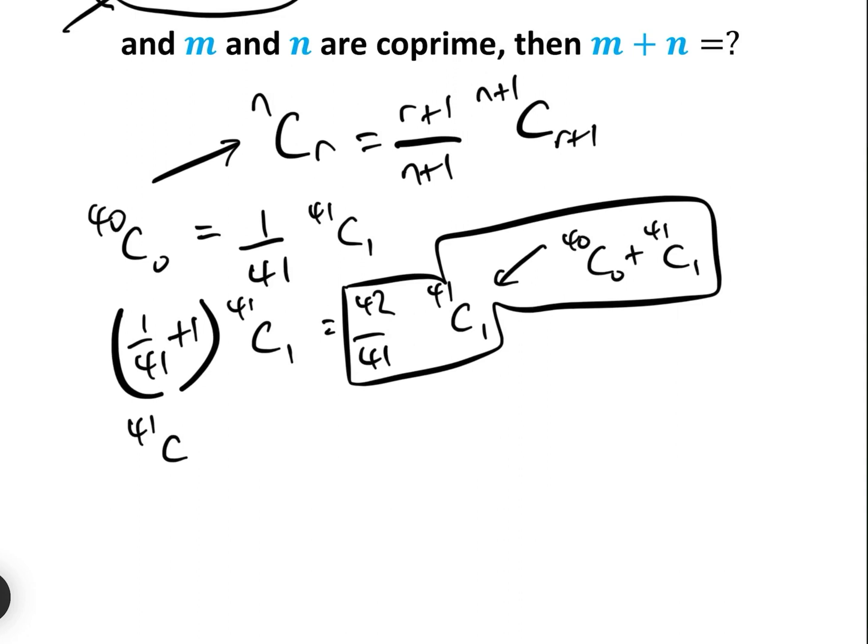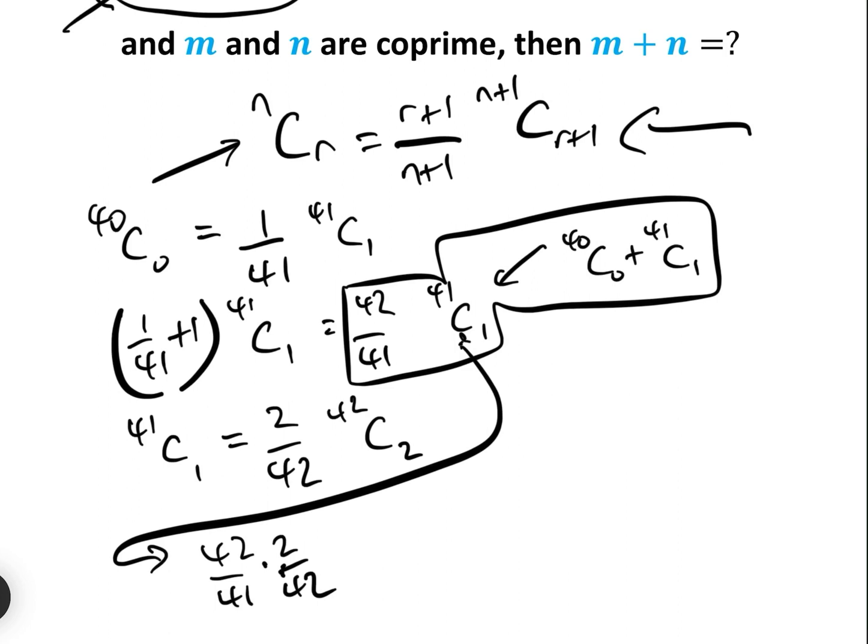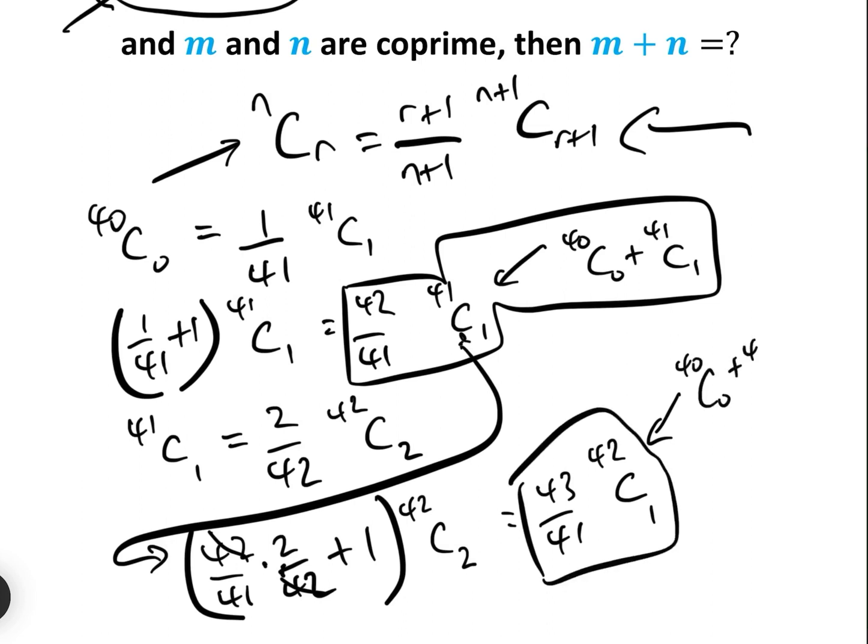Now let's have a look at 41C1 and we want to convert that into 42C2. Well, 41C1 using this formula here is equal to 2 over 42 times 42C2. So how many 42C2s do we have? We've got from here 42 over 41 times 2 over 42 times 42C2 add 1, which is the one in the original question, 42C2. This equals, here's where the interesting thing is, the 42 cancels out so we're left with 2 over 41 add 1, which equals 43 over 41 times 42C2. That bit there is equal to 40C0 add 41C1 add 42C2.